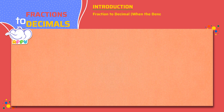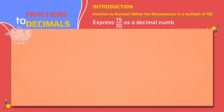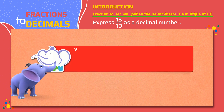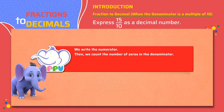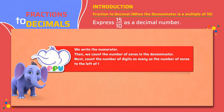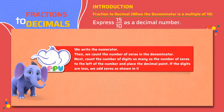Fraction to decimal when the denominator is a multiple of 10. Any fraction can be expressed as a decimal number. Let's look at converting fractions with 10 as a denominator to a decimal number. For example, express 15 by 10 as a decimal number. We write the numerator, then we count the number of zeros in the denominator. Next, count the number of digits as many as the number of zeros to the left of the number and place the decimal point. If the digits are less, we add zeros as shown in the above example.